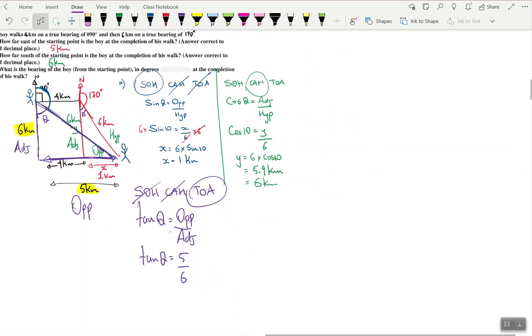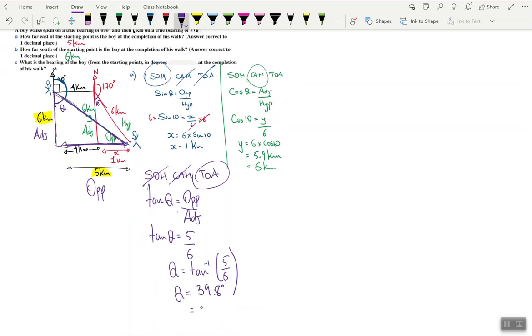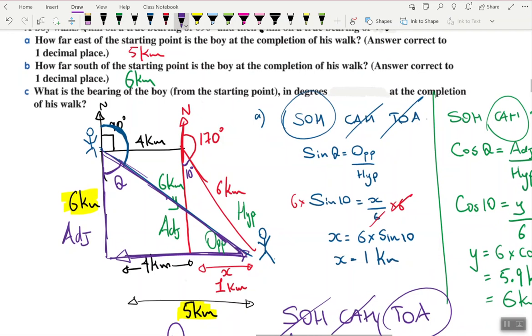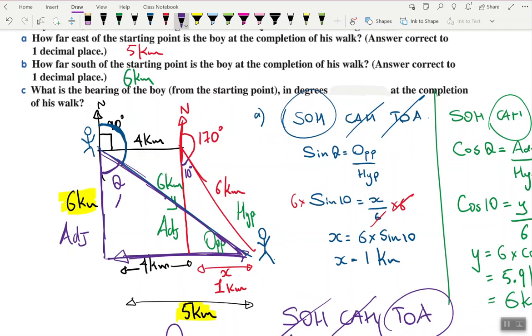And that comes to 39.8 degrees. Again for simplicity I'm just going to call this 40. I'm going to round it up. So we know that the angle theta, this angle there that I'm looking for, is 40 degrees. Now I'm almost there.